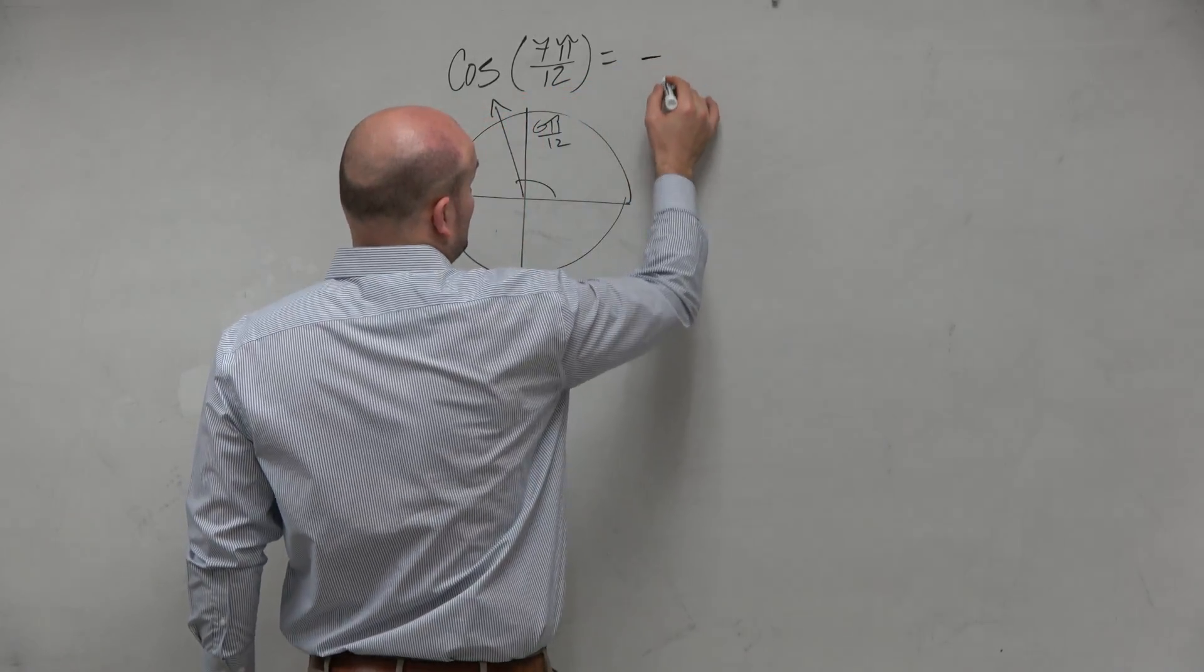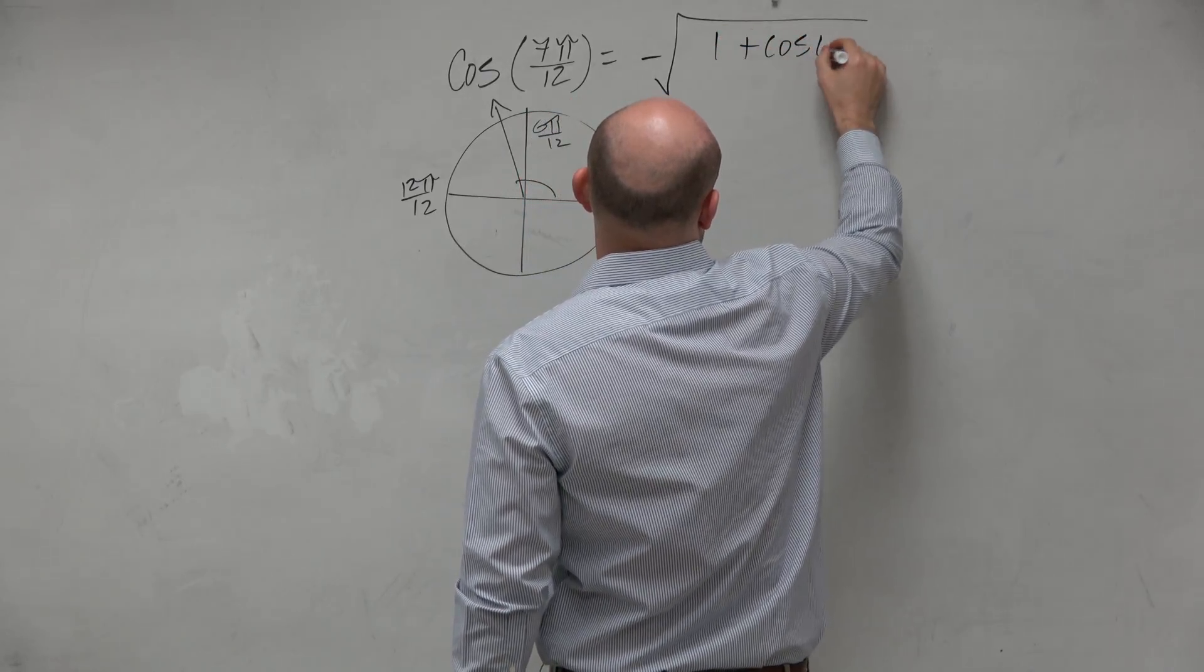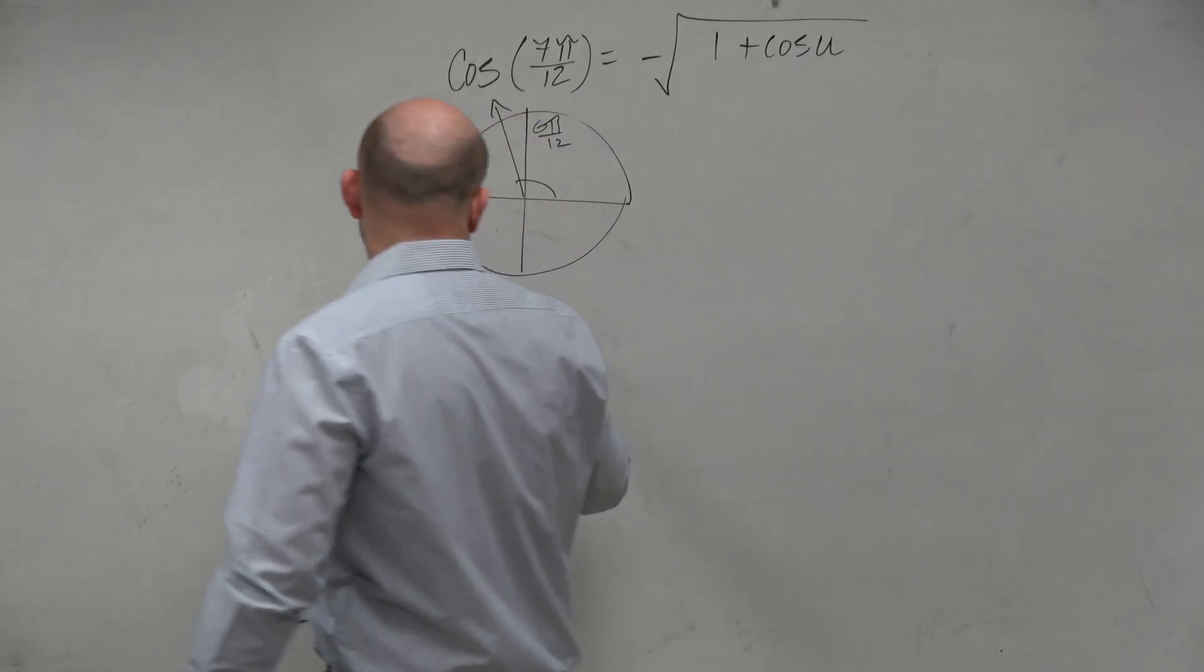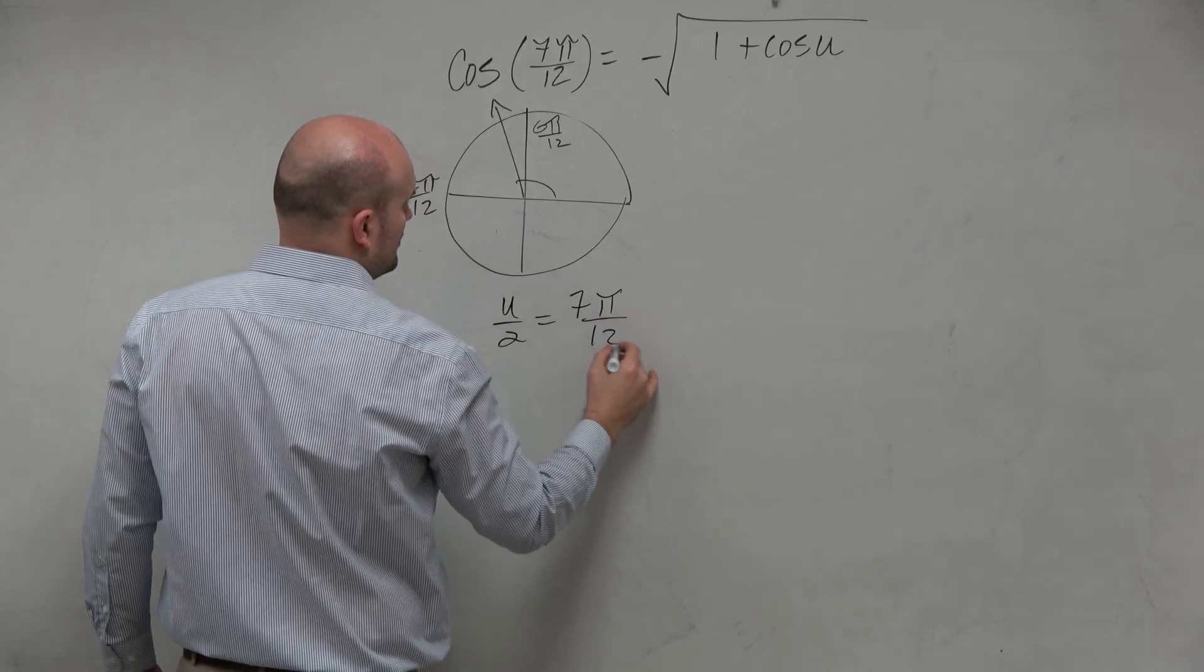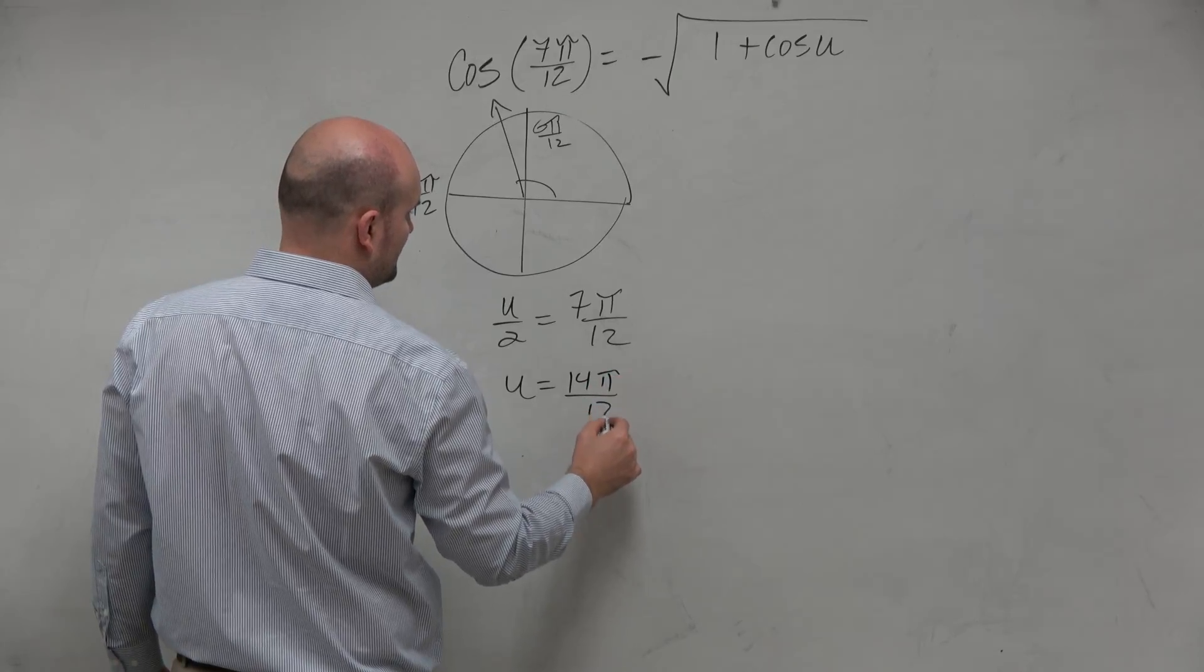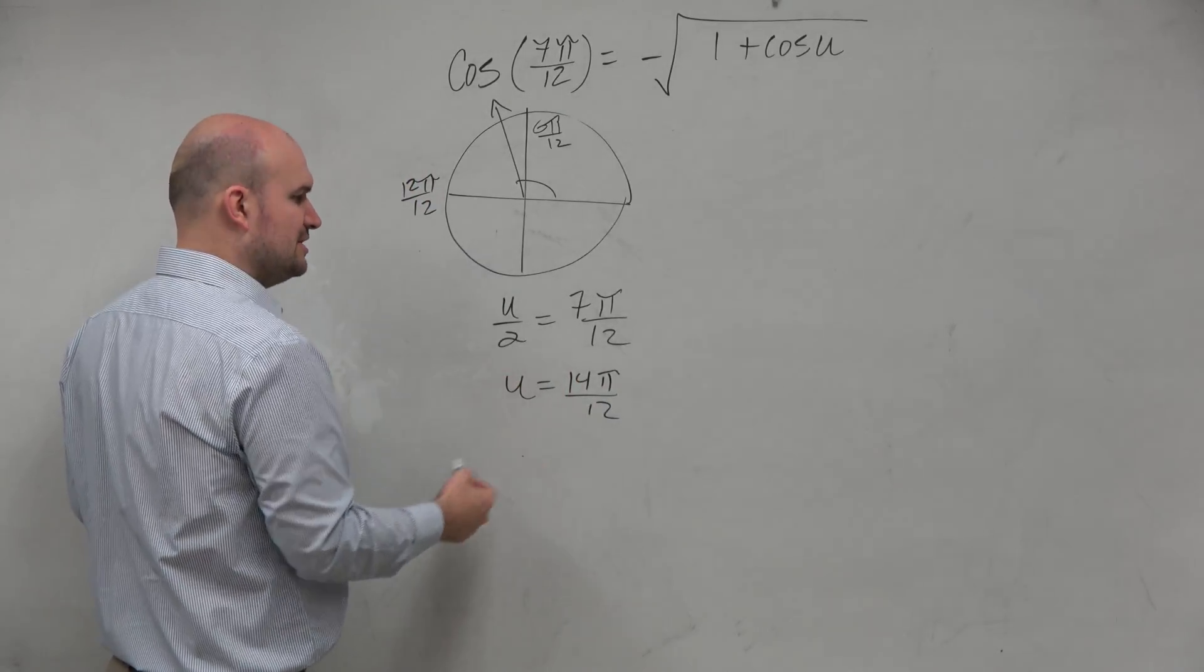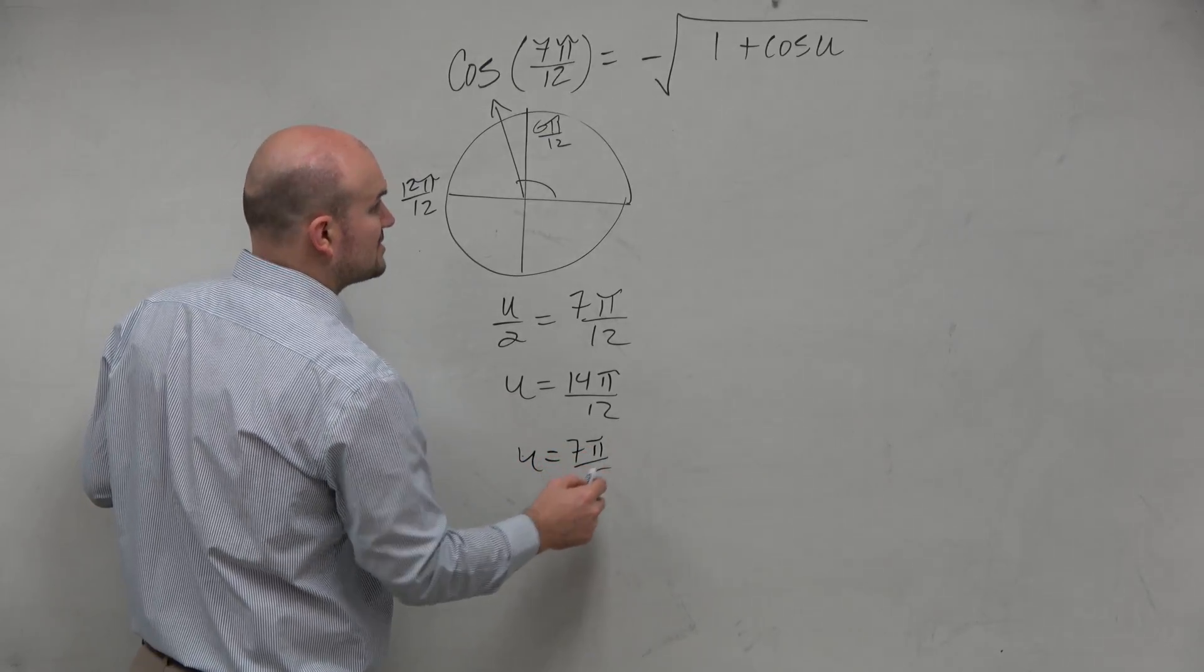So when I'm plugging in the formula, I'm going to use the negative form of this. And then it's 1 plus cosine of u. Now, remember, this for the formula is cosine of u divided by 2. So therefore, I could say u divided by 2 is equal to 7π over 12. Multiply by 2 on both sides, u is equal to 14π over 12, which we know could obviously reduce to 7π over 6.